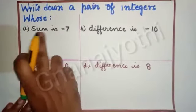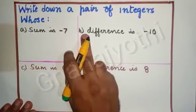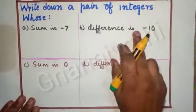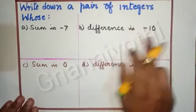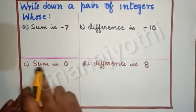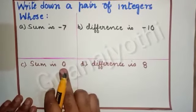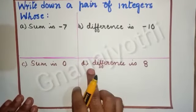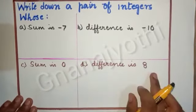A. Sum is minus 7. B. The difference is minus 10. C. Sum is 0. D. Difference is 8.